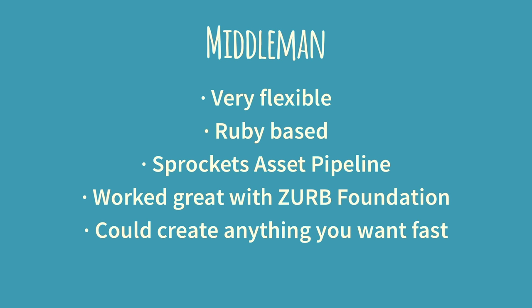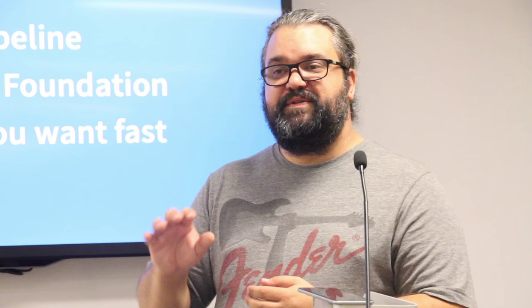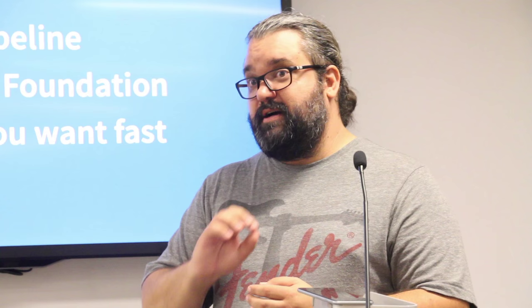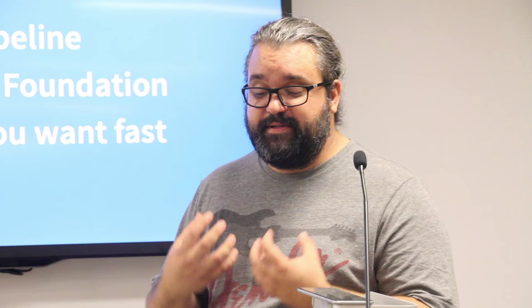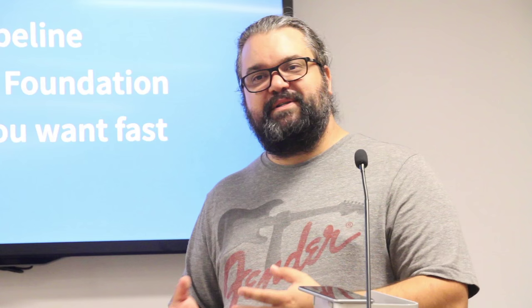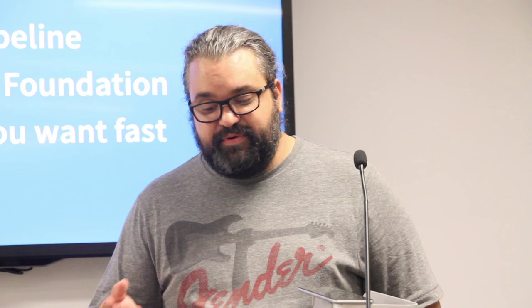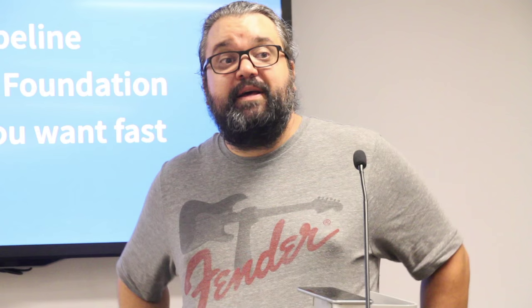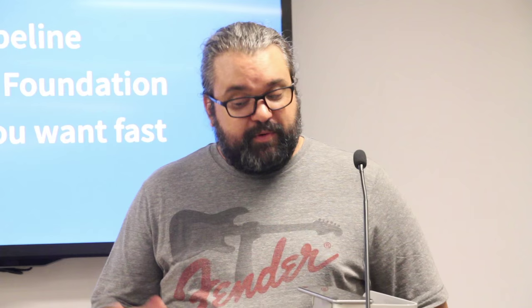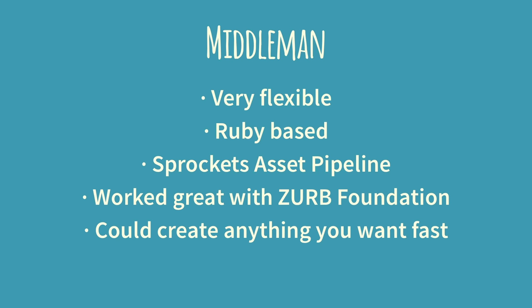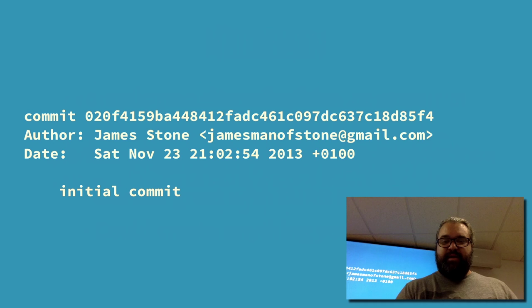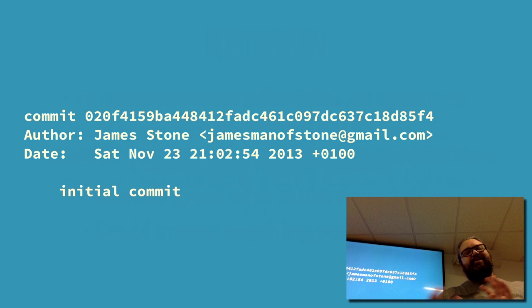That led me to discover Middleman, which I found to be much, much more flexible. It didn't have this granularity with the themes or templates, and I had a really fluid structure I could change. As a front-end dev, I was looking for something I could just link to my CSS files, link to my JavaScript, and do everything myself. I also loved that it was Ruby-based, that it had the Sprockets asset pipeline, which really streamlined things. It worked great with Zurb Foundation — I could create anything I wanted really fast. My solution was Middleman, and I still use it today for my blog.